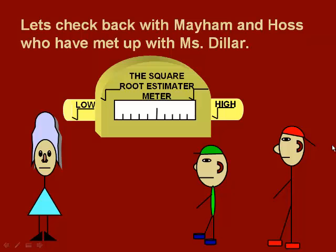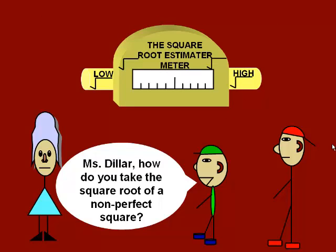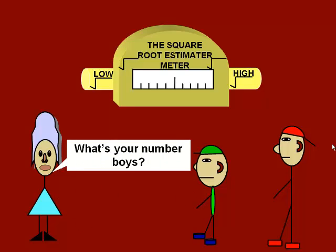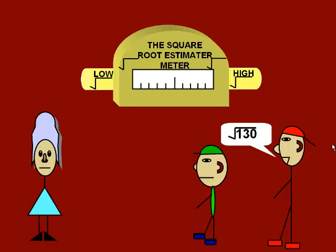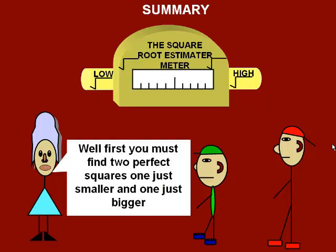Let's check back with our friends Mayhem and Haas, who have now met up with Ms. Diller. Let's take advantage of this opportunity to review how to estimate the square root of non-perfect squares. First, we must find two perfect squares. One just smaller and one just bigger than the number inside the square root. In this case, 130.